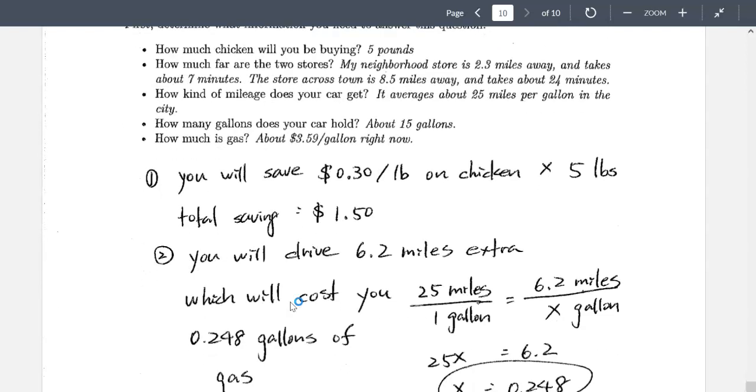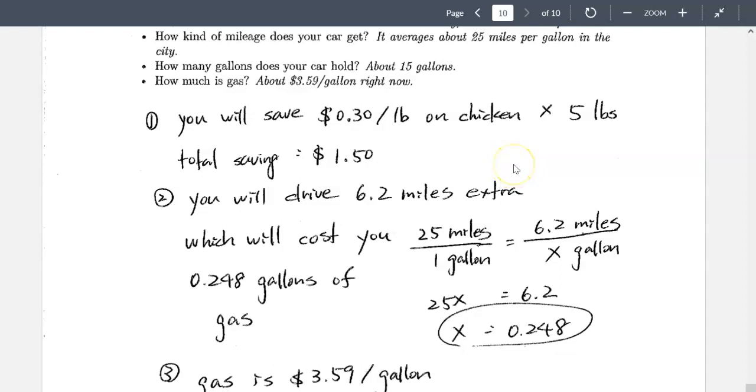All right, so, let's see what do we need. The first thing we find out is, by driving across the town, how much money am I saving on the chicken? So we know that chicken saves $0.30 per pound. If you decide to use five pounds of chicken for dinner, you will save a total of $1.50 because $0.30 times five is $1.50.